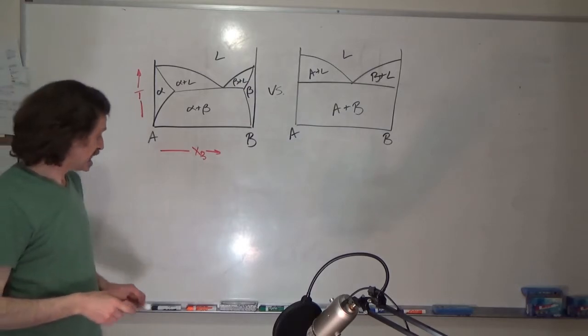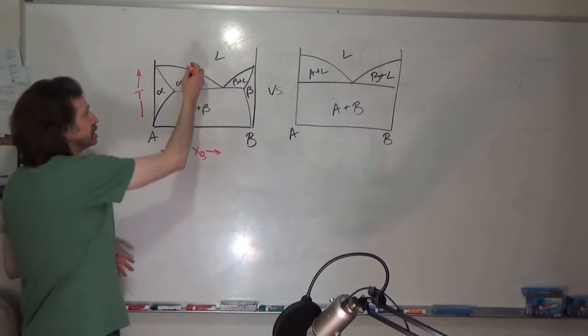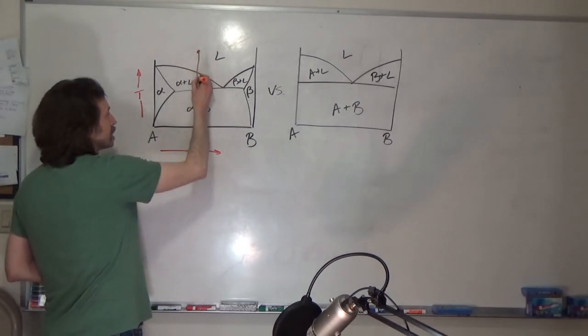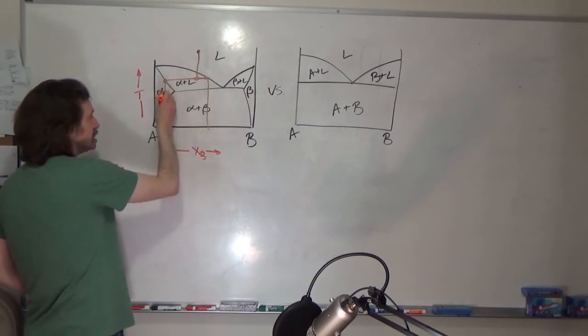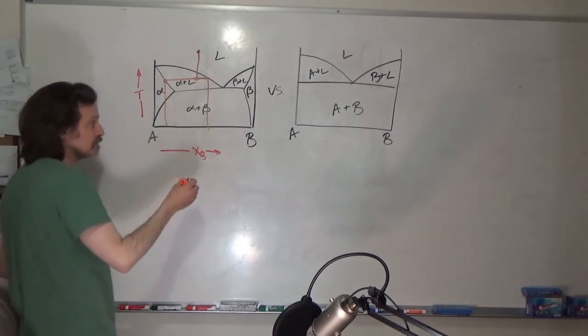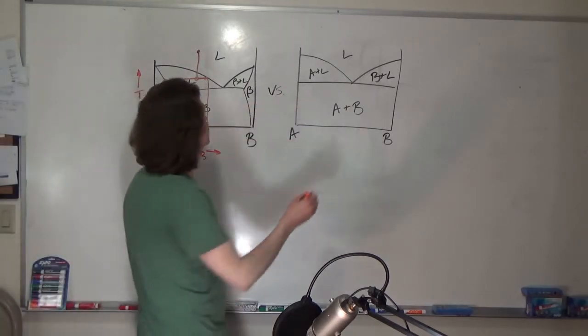Reading from these is exactly the same. Whereas here I cool down, I draw my horizontal tie line, look at the intercepts, and then I use the inverse lever rule to determine the phase fraction. Over here,